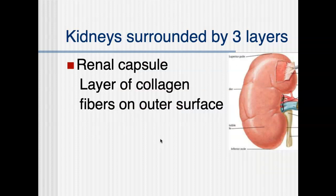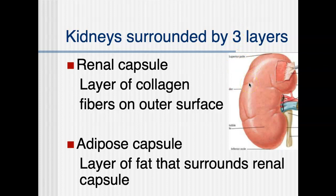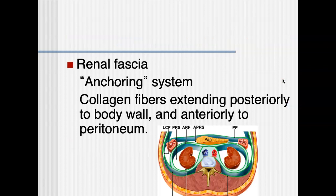The kidney is surrounded by three layers. The renal capsule is the one most adhered to the tissue of the kidney itself — it's a layer of collagen fibers on the outer surface, and it's quite easy to peel off. Beyond that, there is also an adipose capsule — a layer of fat surrounding the renal capsule — so your kidneys are quite protected by fat. The order from outside to inside is: adipose capsule, then renal capsule, and then, more interiorly, the renal fascia, which anchors the kidneys against the posterior abdominal wall so they don't float around when you jump.